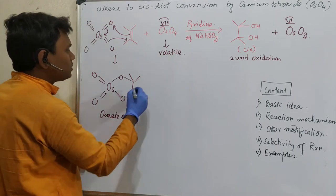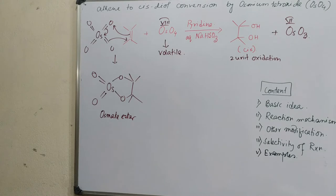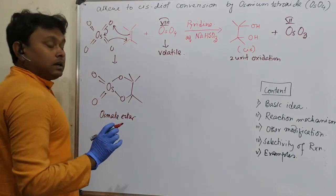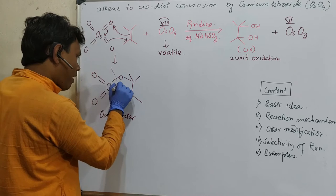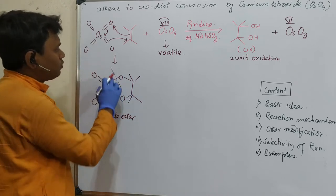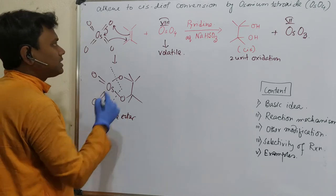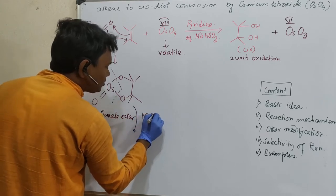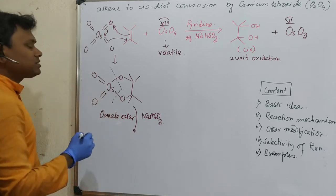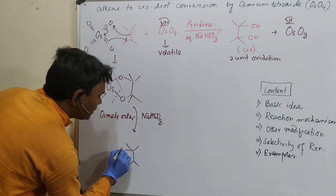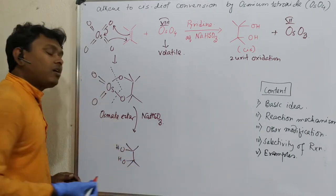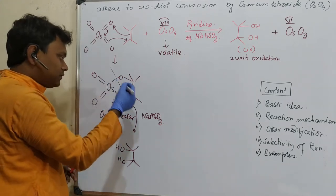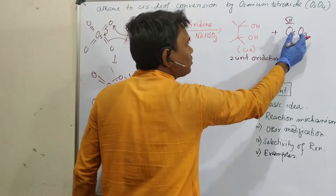So what happens in the next step? This undergoes hydrolysis. Hydrolysis, please be careful. I will provide the proof why this bond not this bond. So hydrolysis, and for this case hydrolysis is done under reducing environment, NaHSO3 reducing environment. Why? Because product is a diol or better to say cis-diol. So this alcohol may oxidize.